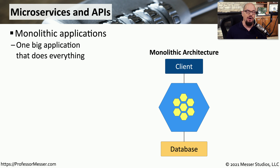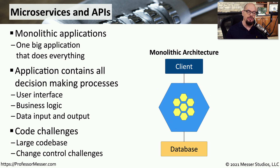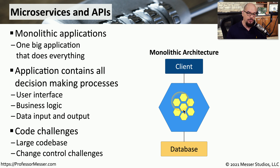Many of the applications we use day to day are one very large application built on a single code base. This application does everything using an enormous amount of code, with everything associated with the user interface, data input and output, and business logic all contained within the same codebase. Having a very large code base with all of these different functions creates additional complexity. This also creates complexity when you need to upgrade or update just one part of the application — there's no method in these monolithic applications to update just a single feature; you have to replace the entire code base.